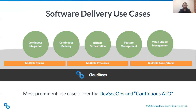CI is enterprise Jenkins; release orchestration spans multiple tools and environments with tracking of evidence and building of audit reports — that's CloudBees CD; and feature flag management on the far right is for pinpointing specific use cases.